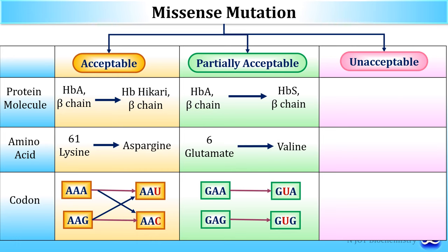The example of partially acceptable missense mutation is that adult hemoglobin (HBA) beta chain changes to HBS beta chain. At the sixth position on the beta chain, glutamate is changed to valine. Glutamate is coded by GAA and GAG, so there is a change in the second base: A is changed to U. GAA becomes GUA and GAG becomes GUG. This is the partially acceptable missense mutation.